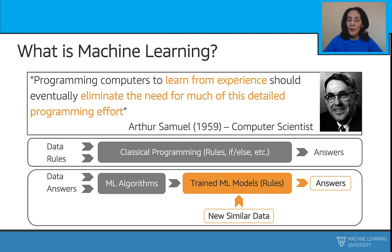That sounds very much like classical programming — you still need to code something. The key difference is that in classical programming, you need to provide an exact recipe: code, sequence of steps, if-else, etc., that tells the machine what rules to apply to solve the problem and provide the answers. Manually crafting and enhancing rules can be a difficult and cumbersome task, sometimes impossible if we don't even know the rules to begin with, and often requires rare domain expertise. Think of writing a program for a complex task like face recognition.